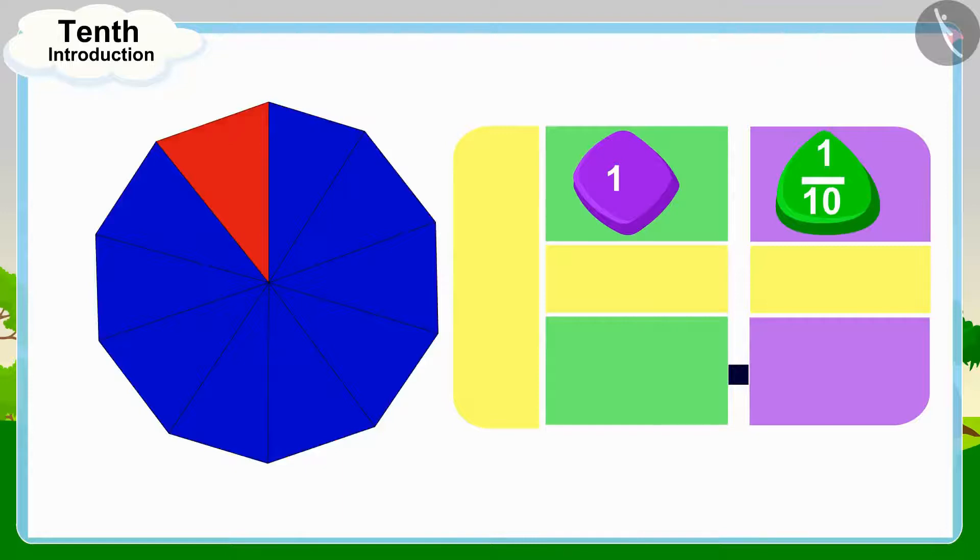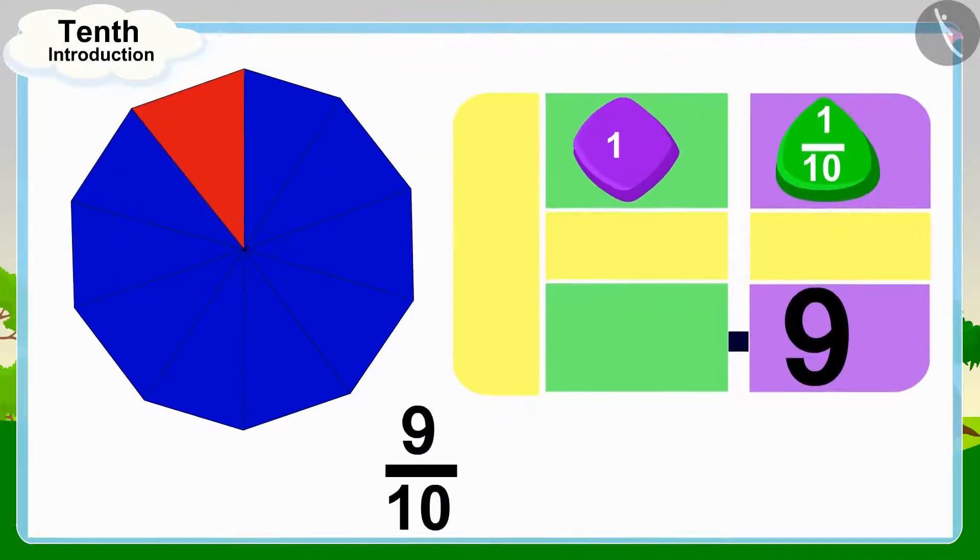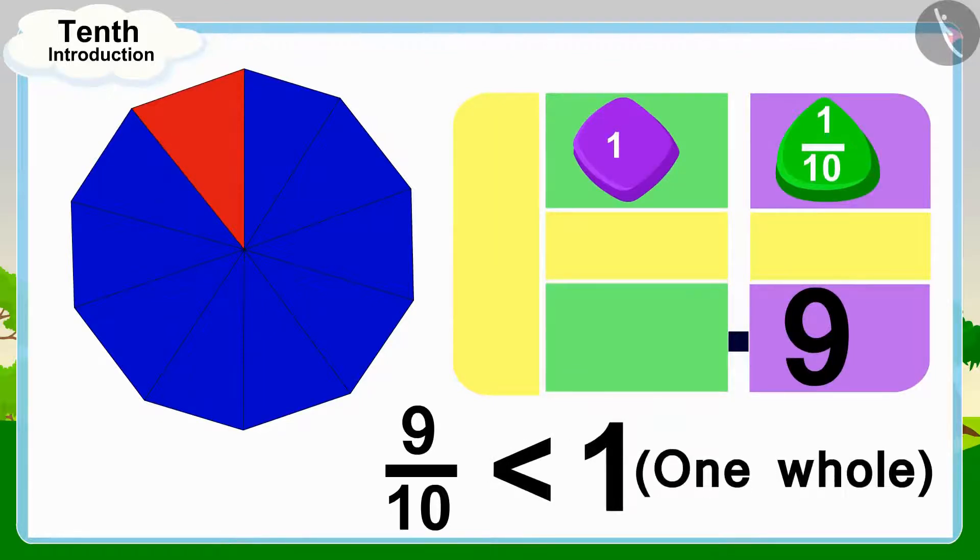Therefore, we will write the number 9 after the decimal point. And because 9 tenth is less than one whole, we will write zero in the units place before the decimal point.